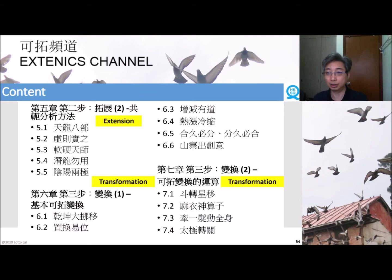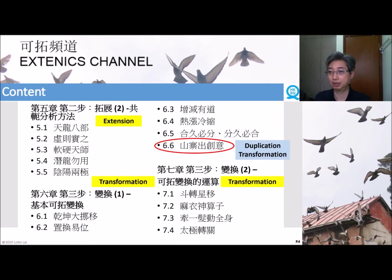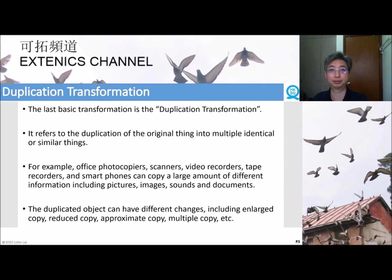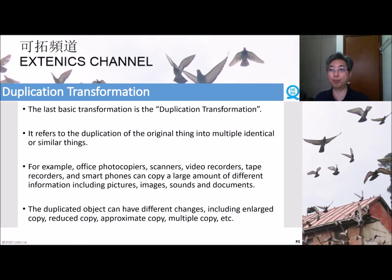This class is Step 3 of the last transformation, called duplication transformation. It is the last basic transformation, and it refers to the duplication of the original frames into multiple identical or similar frames that can be obtained.